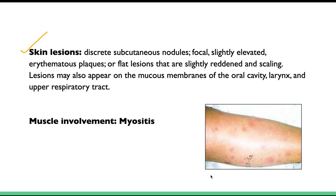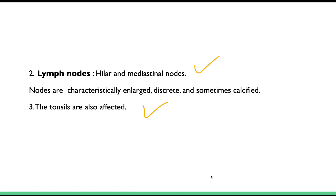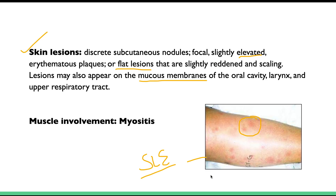Skin lesions are similar to those seen in SLE — red, erythematous patches that can be slightly elevated or flat. These lesions are not only present on the skin but also on the mucous membrane of the oral cavity, the larynx, and the upper respiratory tract. Muscle involvement leads to myositis, causing muscle weakness.